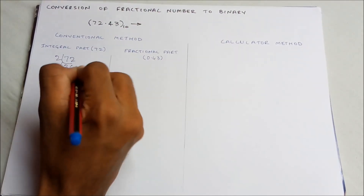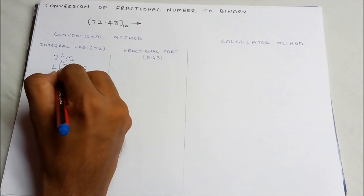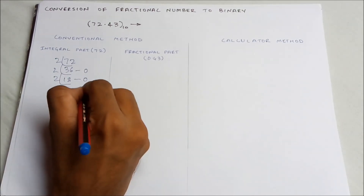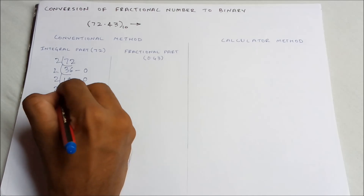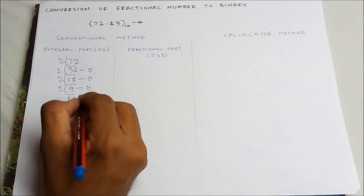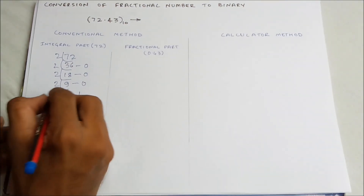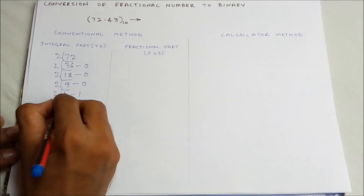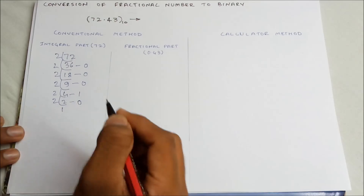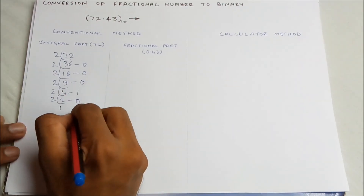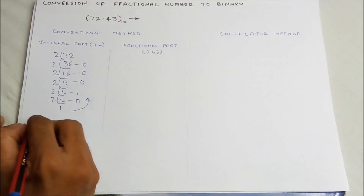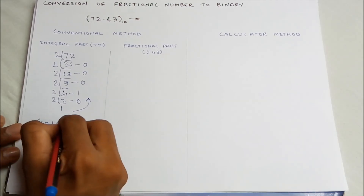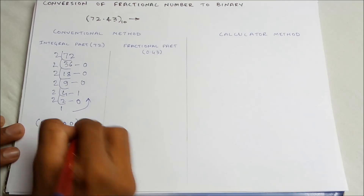36 divided by 2 gives 18, remainder 0. 18 divided by 2 gives 9, remainder 0. 9 divided by 2 gives 4, remainder 1. 4 divided by 2 gives 2, remainder 0. Writing the remainders in inverse order gives: 1, 0, 0, 1, 0, 0, 0. So the binary representation of 72 is 1001000.